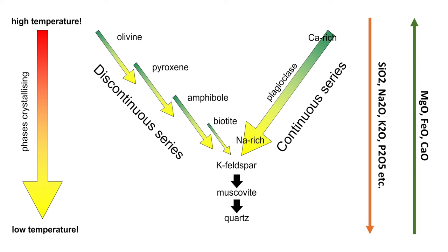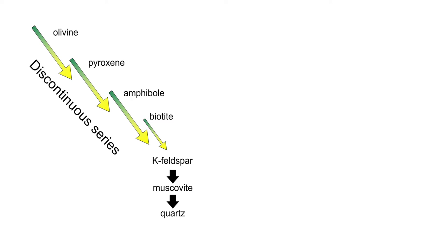Let's take a look at the discontinuous series, because the continuous series is fairly self-explanatory since we've looked at solid solution phase diagrams in previous lessons. What the discontinuous series really represents is crystal structure and silica activity. So silica typically takes the form of tetrahedra, SiO4-, and that forms the foundation of these particular silicates.